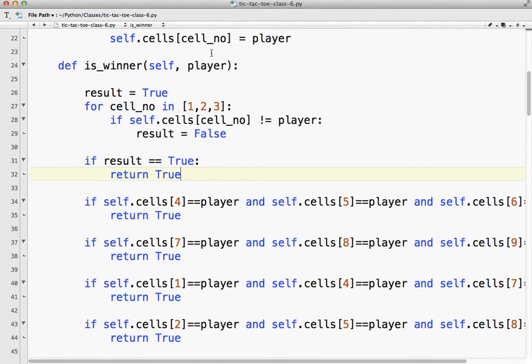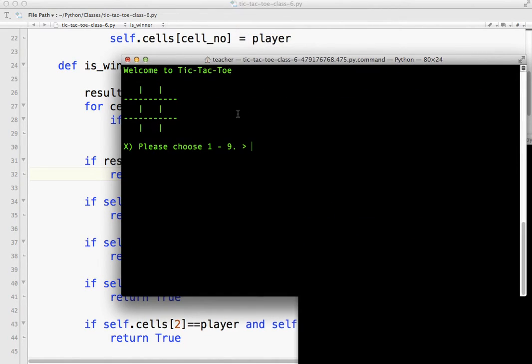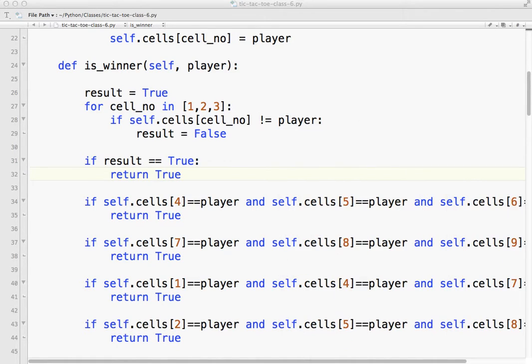So what we have to do is if the result equals true, return true. Otherwise, we just keep going and checking the rest. So let's see if that works. All right, so 5, 4, 8. Okay, so 1, 2, 3, it still works. So we know that whatever we did, it was working.